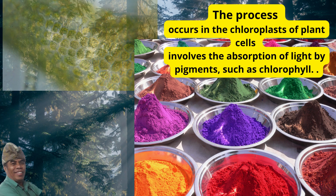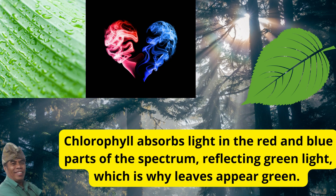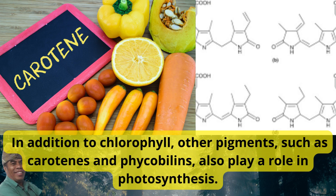The process of photosynthesis occurs in the chloroplasts of plant cells and involves the absorption of light by pigments, such as chlorophyll. Chlorophyll absorbs light in the red and blue parts of the spectrum, reflecting green light, which is why leaves appear green. In addition to chlorophyll, other pigments such as carotenes and phycobiolins also play a role in photosynthesis.